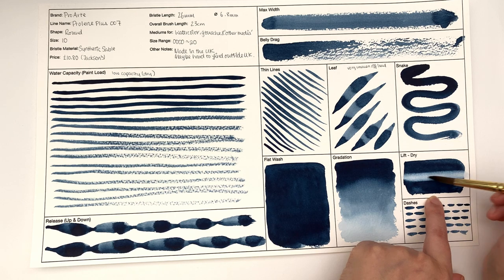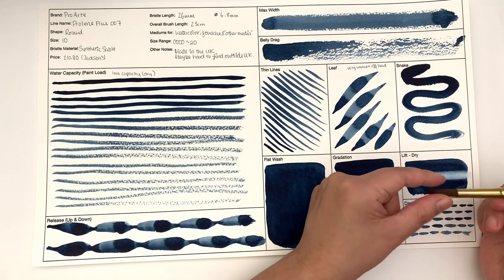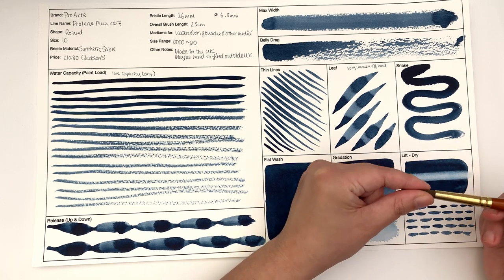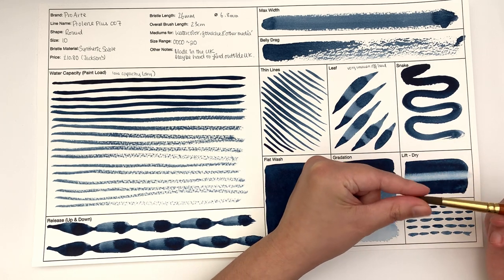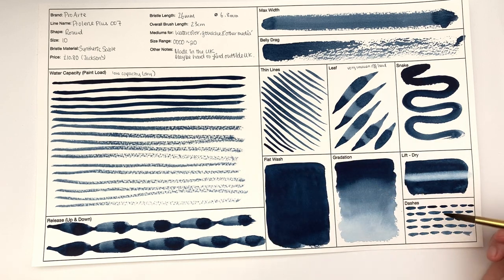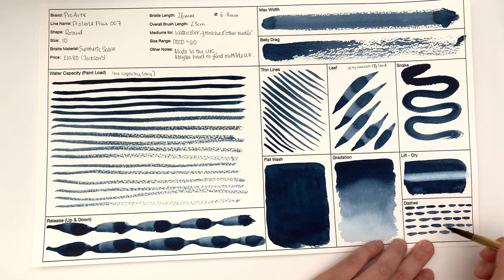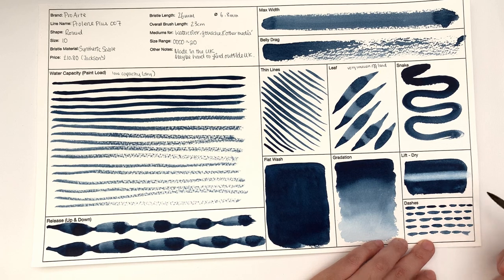With the Princeton Heritage, you didn't have this lighter area here. So it's definitely a firmer, bouncier brush than the Princeton Heritage. And in terms of dashes, it's not very good at it because it's not got the fine tip that you need. If the Princeton Heritage was a long grain rice, this is more of a short grain rice.